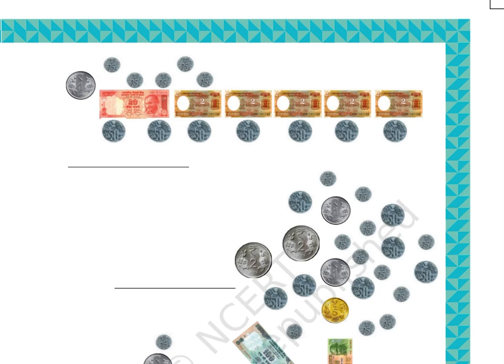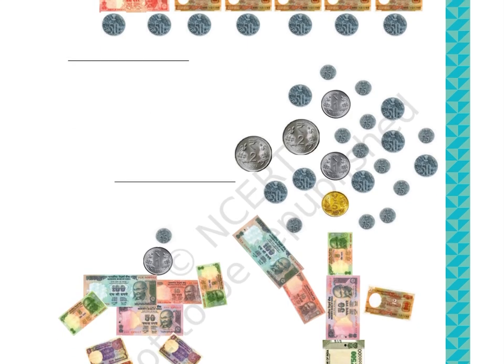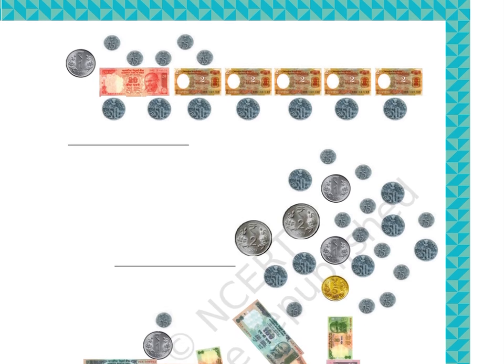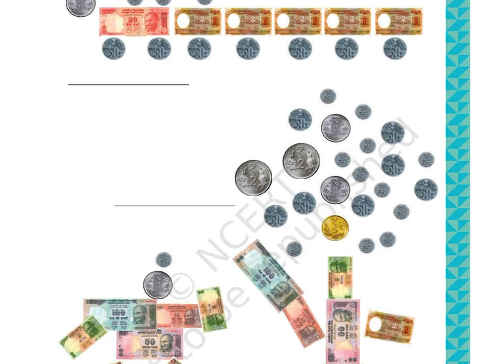Part D: The given picture shows 11 coins of 25 paise, 7 coins of 50 paise, 2 coins of 1 rupee, 2 coins of 2 rupees, 1 coin of 5 rupees, 1 two-rupees note, 1 five-rupees note, 1 ten-rupees note, 1 fifty-rupees note, 1 hundred-rupees note, and 1 five-hundred rupees note. Blank space is given on the left side to write the answer.